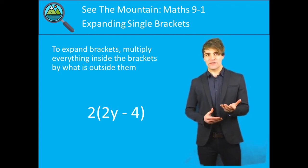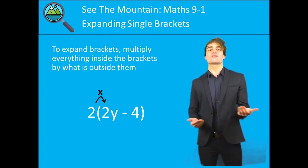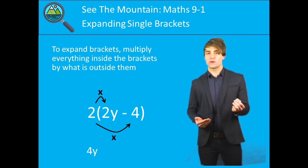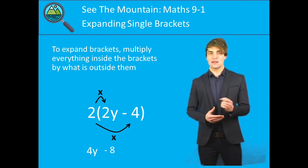Okay, so what you should have found is 2 multiplied by the 2y gives us 4y. Then 2 multiplied by the minus 4. 2 times minus 4 gives us minus 8. Here's our final answer, 4y-8.